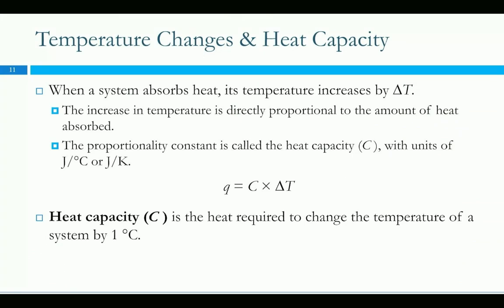When a system absorbs heat, temperature changes by delta T. The amount of temperature change for the amount of heat is not always the same for different objects. Depending on the substance, it's going to have something called a heat capacity. Heat capacity — not specific heat capacity or molar heat capacity, just the heat capacity — has units of joules per degree C or joules per Kelvin. Those numbers should be the same since we're using change in temperature. Heat capacity is less useful for most things because there's another factor: if you're heating up a small cup of water, it takes a lot less energy than heating a large pot of water. The amount matters.